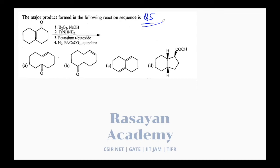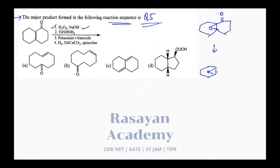Question number 5. The major product formed in the following reaction sequence: first you see H₂O₂ in the presence of NaOH to an alpha-beta unsaturated ketone system. The alpha-beta unsaturated ketone will get epoxidation on the electron-deficient double bond under basic conditions. This gives you the product of reaction 1. Reaction 2 uses tosyl hydrazone, giving you the alpha-beta epoxy tosyl hydrazone.